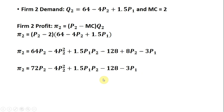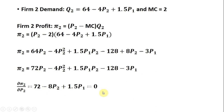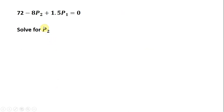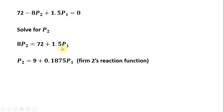Now we're ready for a derivative. We'll take the partial derivative of firm two's profit function with respect to its choice variable, the price of its product, P subscript two, and that will give us this result. Like with firm one, we set the derivative equal to zero and now we're going to solve for P subscript two. Adding 8P subscript two to both sides, we get this result. Dividing through by 8 leaves us with firm two's reaction function.